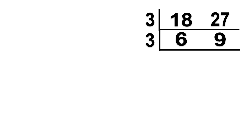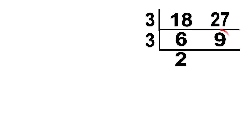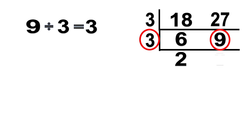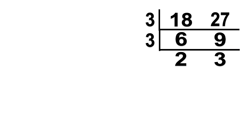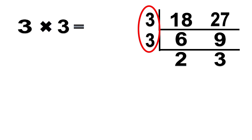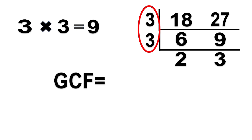So, we are going to use 3 as our common prime divisor. Then, let's proceed with division. 6 divided by 3 equals 2 and 9 divided by 3 equals 3. The remaining numbers are 2 and 3. 2 and 3 have no common factors. Therefore, we can now stop dividing. Next, multiply the prime divisors. We have 3 times 3 equals 9. So, the greatest common factor is 9.